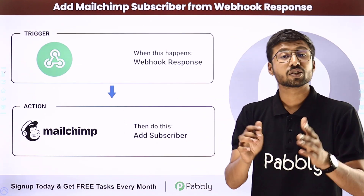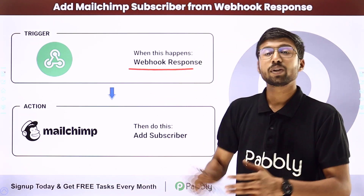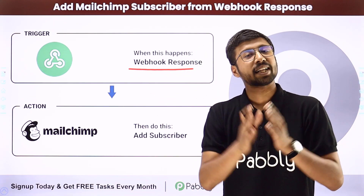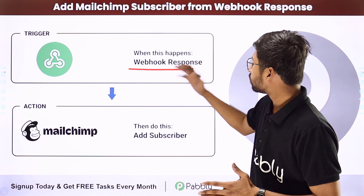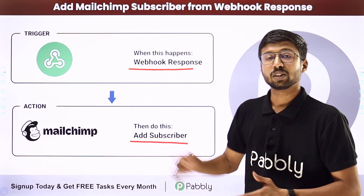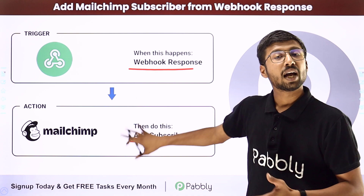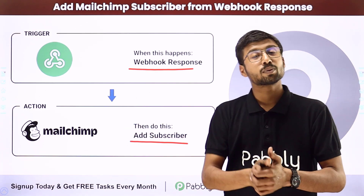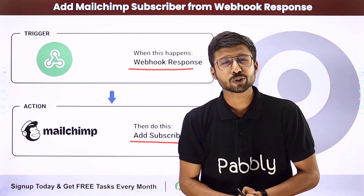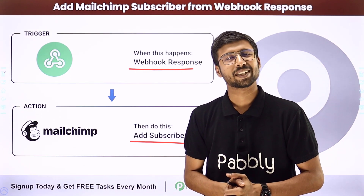In this automation, the trigger will be getting a new Webhook response from the application of your choice, and the action will be adding the same response as a new subscriber in Mailchimp — using the details received in the response to create a subscriber in your Mailchimp account. Now, how can you set up this automation?